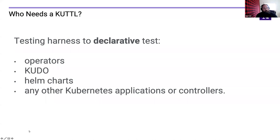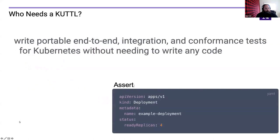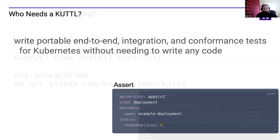Our goal was to be able to write portable end-to-end integration and conformance tests for Kubernetes without needing to write any code — without having to jump into go test or write a separate bash testing framework. We really wanted testing to feel native to Kubernetes, and that was very important in the API decisions we made.